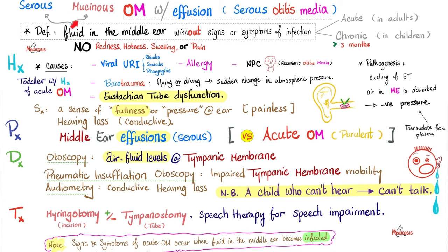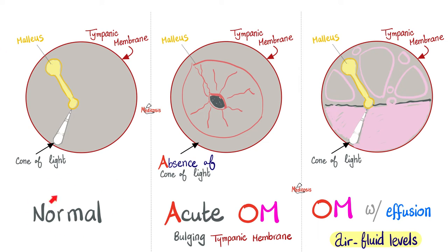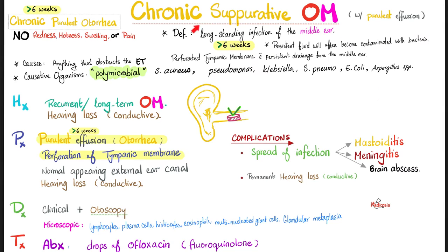This effusion could be serous or mucinous, but not purulent — no pus. On otoscopy, you'll see air fluid levels for the effusions. Here is the normal tympanic membrane. Here is acute otitis media — bulging tympanic membrane, disappearance of the cone of light. And here is otitis media with effusion — you see tons of effusion and air fluid levels.